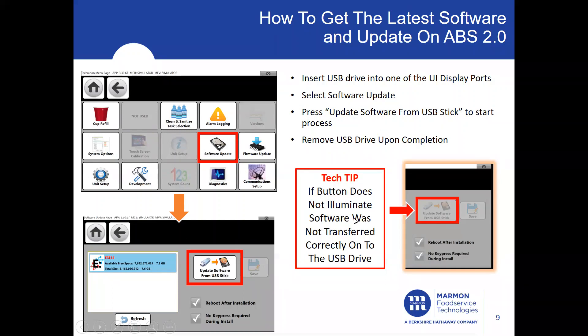This is important for awareness: if the Update Software from USB button does not illuminate, that means the software was not transferred correctly onto the USB drive. If the files were transferred correctly and the USB drive is working as it should, the Update Software from USB button will be lit up. Proceed with pressing Update Software from USB and the update process will start. After the unit completes its full update process, remove the USB drive from the UI display.